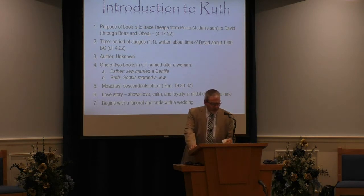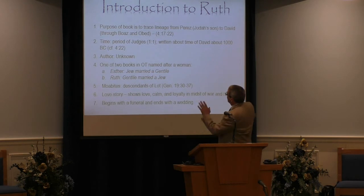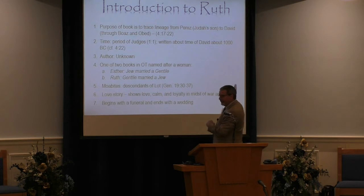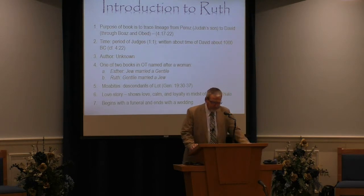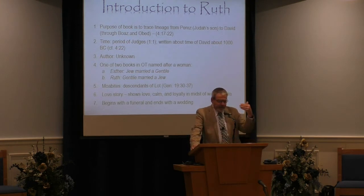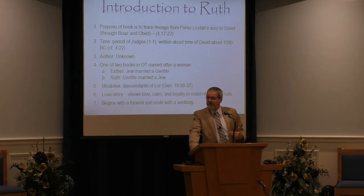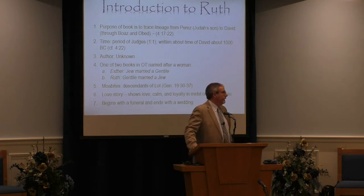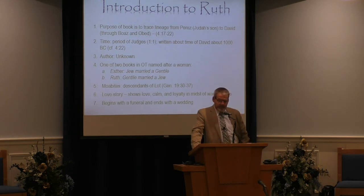Going back to chapter 4 verse 22 for cross reference — it would have been written about the time of David, around 1000 BC. Why do some think that? Because the lineage ends with David and doesn't go on to Solomon. Could it have been written much later and they just stopped at David anyway? Sure. But that's why some think it was probably written around the time of David. As for the author, we don't know — there's very little speculation about the author. This is one of two books in the Old Testament named after a woman: Esther and Ruth.